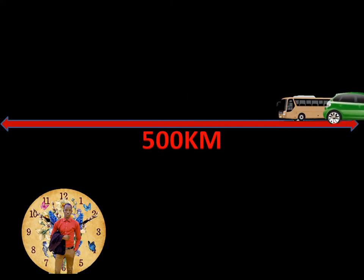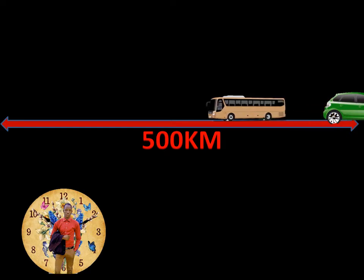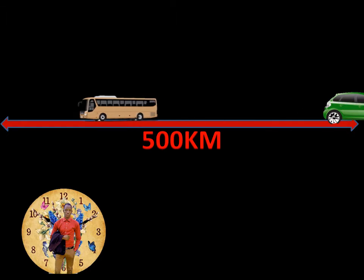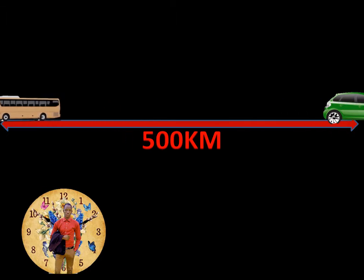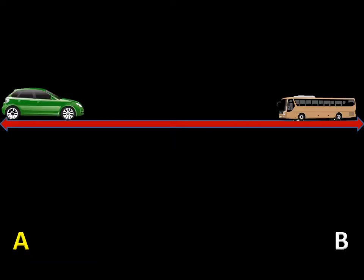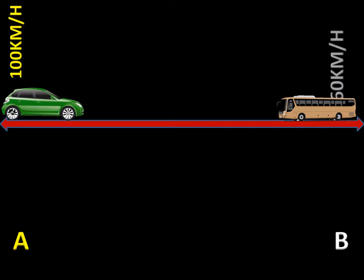The car is moving to the right towards town B and the bus is moving to the left towards town A. We have town A and town B marked. These two vehicles are moving with their specific speeds. The speed of the car is 100 kilometers per hour and the speed of the bus is 60 kilometers per hour.